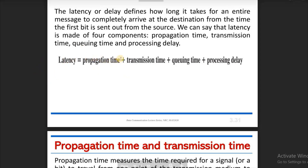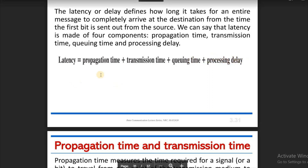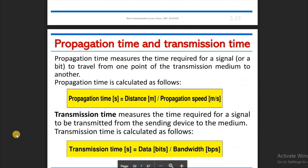Latency equals propagation time plus transmission time plus queuing time plus processing delay. The propagation time and transmission time are key components of the overall latency calculation.